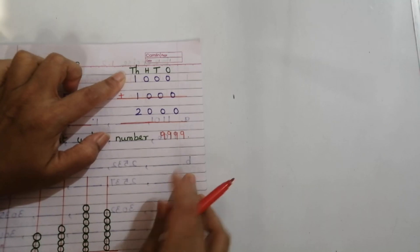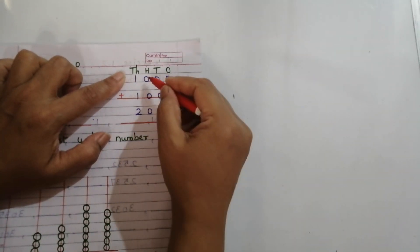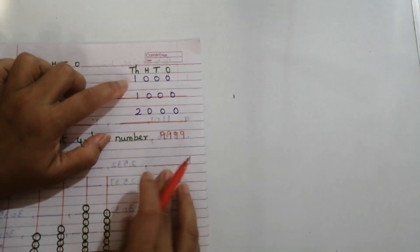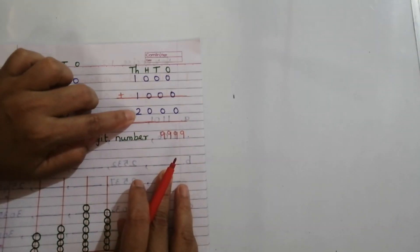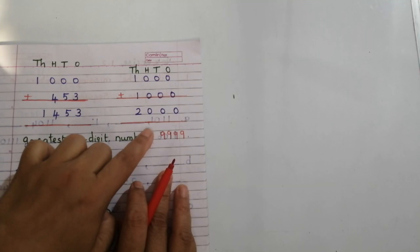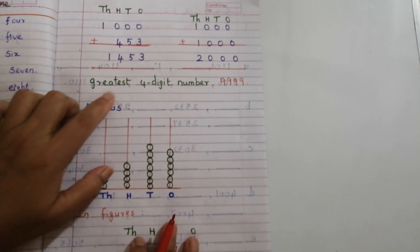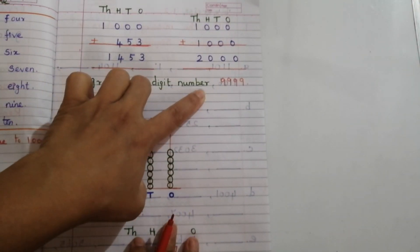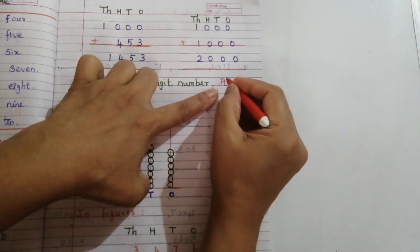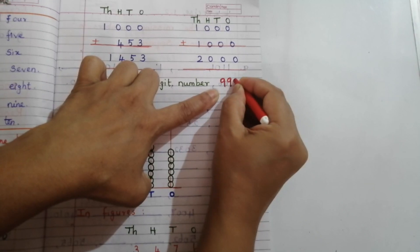Adding one thousand to another one thousand: zero plus zero, zero plus zero, zero plus zero, and one plus one gives two — so we get two thousand. The greatest four-digit number is nine thousand nine hundred and ninety-nine (9999).